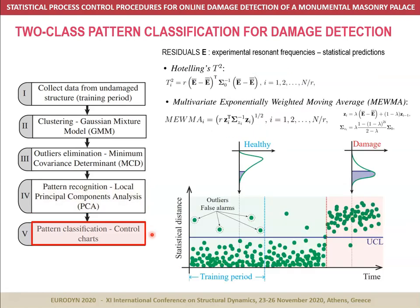Once we have a statistical regression model characterizing the healthy condition of the structure, it is possible to investigate the appearance of damage throughout the analysis of the differences or residuals between the experimental resonant frequencies and the predictions of the statistical model. A common approach to detect the appearance of an anomaly — in other words, damage — in the time series of the residuals is the use of statistical control charts. This approach essentially represents a certain statistical distance or metric between the resonant frequencies and the training population. Therefore, if a damage process initiates, it can be detected in the shape of an alteration in the statistical distribution of this statistical distance. In this work we have used Hotelling's T-square control chart and the multivariate exponentially weighted moving average control chart. Interested readers can find more information about these control charts in the conference paper.